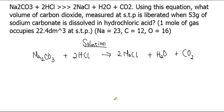After writing the balanced chemical equation, the next step is to identify the compounds we are working with — the one we have information about and the unknown. From the question, we have 53 grams of sodium carbonate, and the unknown we want to find is the volume of carbon dioxide produced at the end of this reaction. So we will be considering sodium carbonate and carbon dioxide.